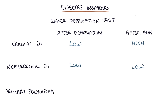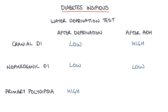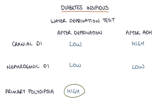In primary polydipsia, the eight-hour water deprivation will cause the urine osmolality to be high even before synthetic ADH is given. If you have a high urine osmolality after water deprivation, you know they don't have diabetes insipidus, so there's no purpose in giving ADH — you can exclude diabetes insipidus at that point. To summarize: in cranial DI, urine osmolality is low after deprivation and high after ADH; in nephrogenic DI, it's low after deprivation and remains low after ADH; in primary polydipsia, it's high after deprivation and remains high after ADH.